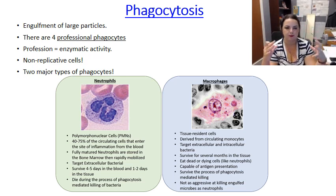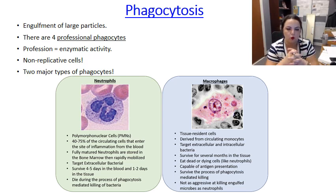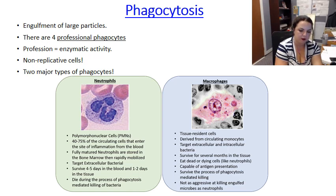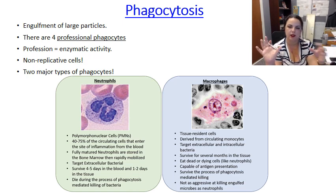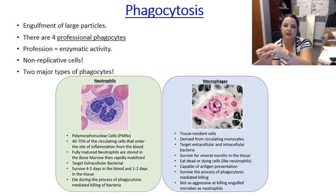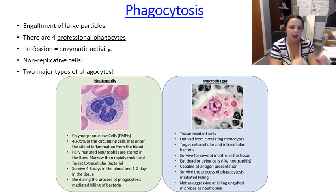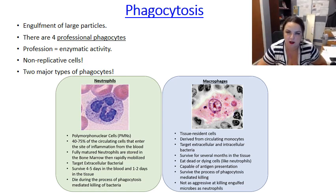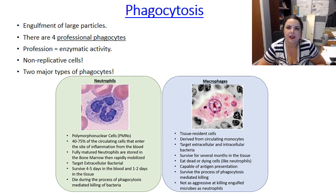We're going to talk about the steps that lead to elimination of microbes by professional phagocytic cells. When engulfing a pathogen, the first step is to contain it in the phagosome. The phagosome surrounds the engulfed pathogen and leads to its destruction. In some cases the organism is destroyed and the cell survives; in others, the phagocyte has to go down with the ship, making the ultimate sacrifice.